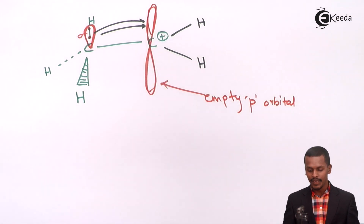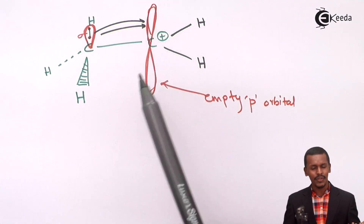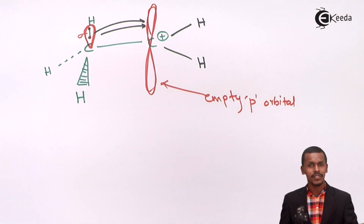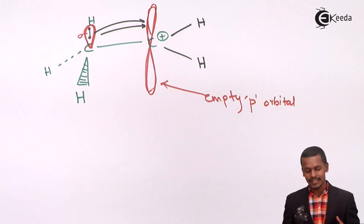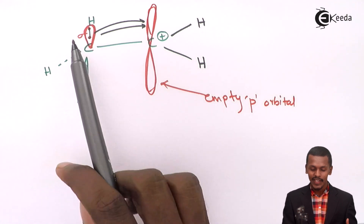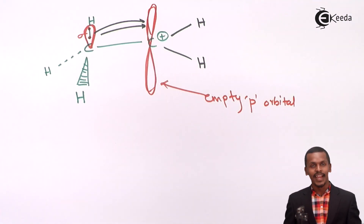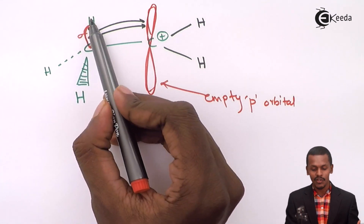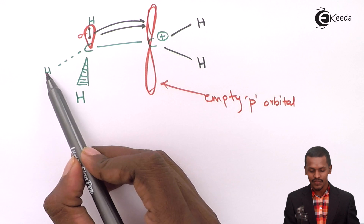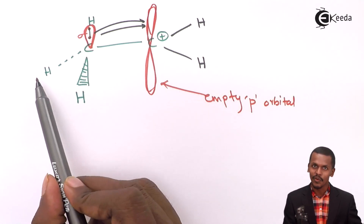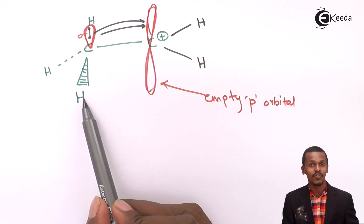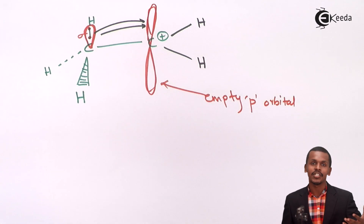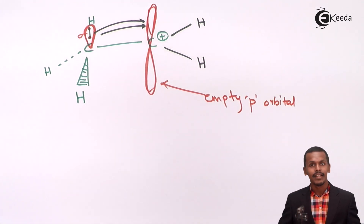After the electron is transferred toward the empty p orbital, the carbocation carbon gets stabilized, because highly positive or charged species are reactive short-lived species that seek stabilization. Meanwhile, the hydrogen loses its electron to the empty p orbital and becomes positively charged. Then the next sigma bond — between hydrogen and the adjacent carbon — also delocalizes its electrons to stabilize that carbon, making the next hydrogen positive. This delocalization continues, and this ongoing process is basically known as hyperconjugation.